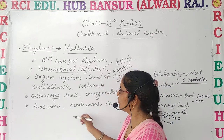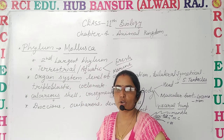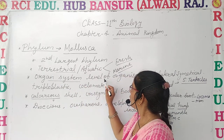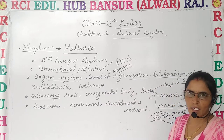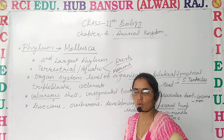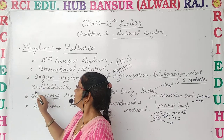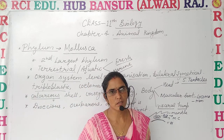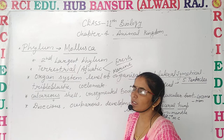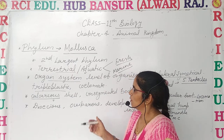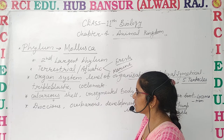Now let's discuss the common features. They have organ system level of organization. Besides that, they are bilaterally symmetrical — the body can be divided into two equal halves through a single plane. They are also triploblastic, meaning the body consists of three germ layers. Whenever you see this word, you should immediately recall: three germ layers.